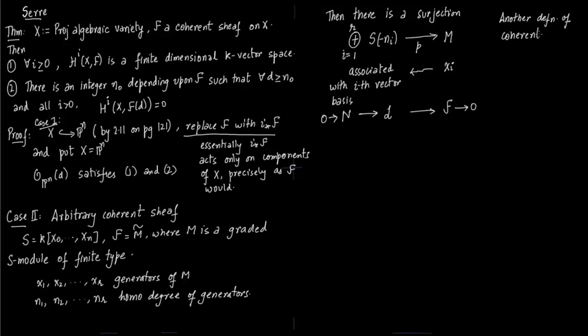I want to recall that there is another definition of coherent sheaf F, where this map from O_X^n (n copies of O_X) to F is onto. N is the kernel sheaf, and the kernel sheaf is also of finite type.